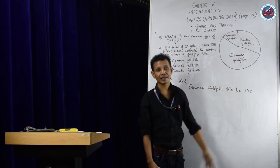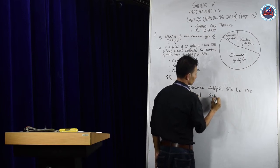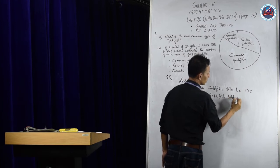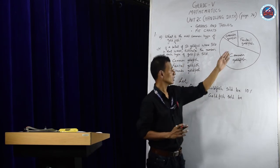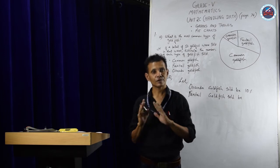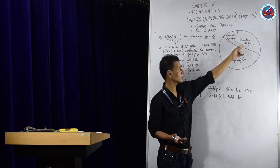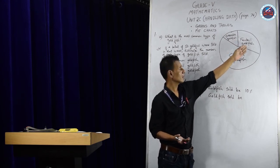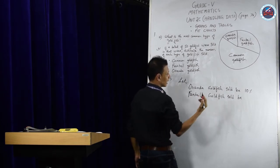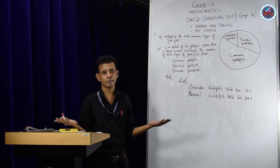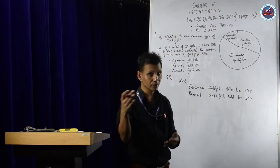Now let's go to pantel goldfish. Remember, when you add all three parts, you must get 100, because we're dealing with percentage. Since oranda is 10%, pantel must be greater than that. I'll take 30%. You can practice with different numbers — we'll all conclude in the same way.